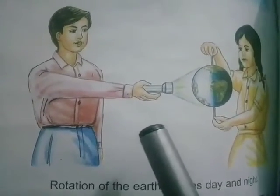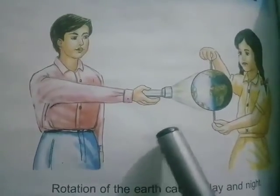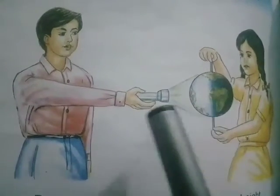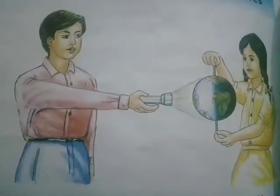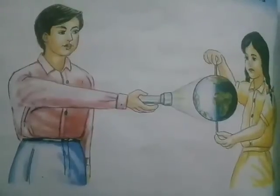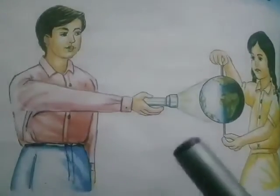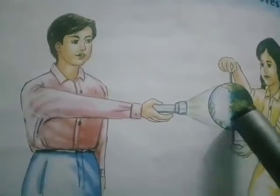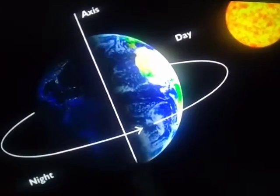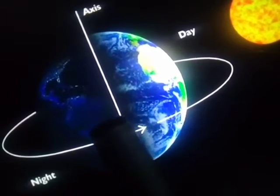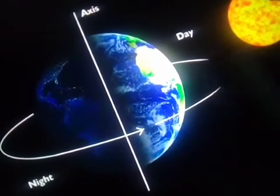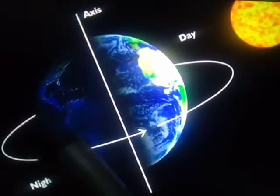We understood this with the help of an experiment. In this experiment we need two things: a torch and a ball. Shine a torch on the ball in a dark room. The torch represents the sun and the ball represents the earth. You notice that only half the ball is lit and the other half is dark. Now spin the ball around the needle. The dark area now becomes lighted and the lighted area goes into darkness. Similarly, as the earth spins on its axis, day and night follow each other. The portion of the earth facing the sun has day, and the portion facing away from the sun has night.